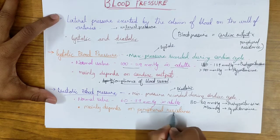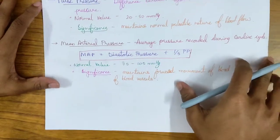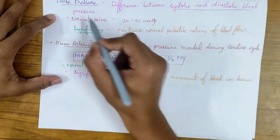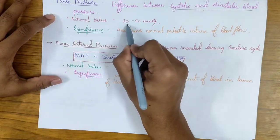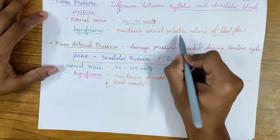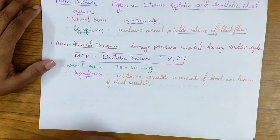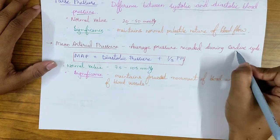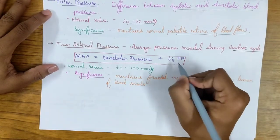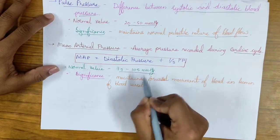Diastolic blood pressure depends mainly on the peripheral resistance component of the formula. The next term is pulse pressure — it is the difference between the systolic and diastolic blood pressure. Its normal value is 20 to 50 mmHg. The significance of pulse pressure is that it maintains the normal pulsatile nature of blood flow. The next term is mean arterial pressure, which is the average pressure recorded during the cardiac cycle. Its formula is: diastolic pressure plus one-third of the pulse pressure. Its normal value is 75 to 105 mmHg.